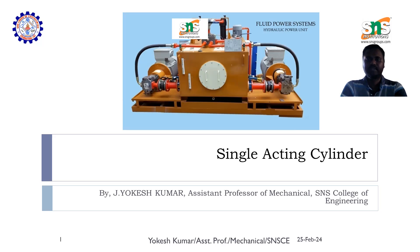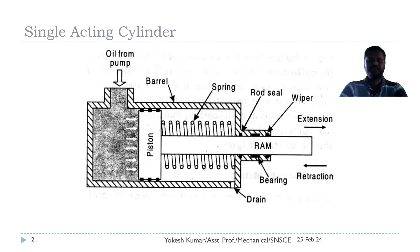So let us have a detailed discussion about the construction and working of the single-acting cylinder. In this illustration, I have shown a sectional view of the single-acting cylinder. Coming to the construction, it has an outer shell called a barrel, which is a housing for the inner components like piston, rods, and others. At one end of the barrel, we have a port where oil from the pump is pumped in to make extension of the cylinder.